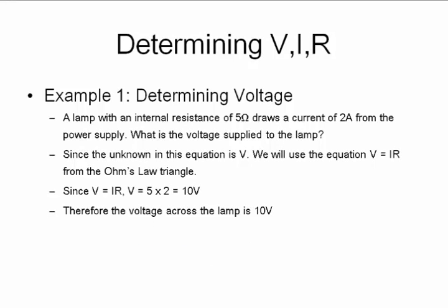Now a very simple example, very very simple. A lamp with internal resistance of five ohms draws a current of two amps. What's the voltage supplied to the lamp? So simply V is IR, meaning 5 times 2 gives you 10 volts. So it's a very basic numerical.